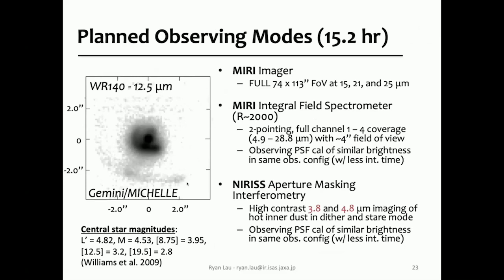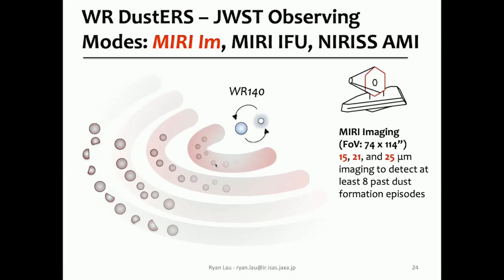We have a 15.2-hour program. We're using the MIRI imager, the MIRI IFU, and also the aperture masking interferometry mode on the NIRISS instrument. For the MIRI imager, we'll be using the full imager field of view to get 74 by 114 arc seconds, with filters at 15, 21, and 25 microns to detect at least eight past dust formation episodes. With the multiple filter combinations, we can determine dust temperatures and then importantly derive dust masses, studying those as we go outwards and count the different dust arcs.